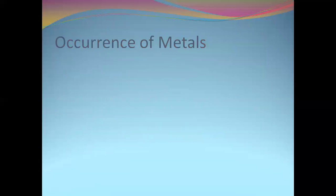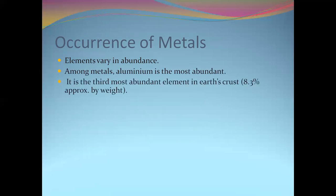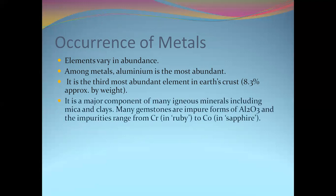Then we can go for occurrence of metals. The elements which are in abundance, that means availability is different. Among metals, aluminum is the most abundant. It is the third most abundant element in the earth's crust. It's a major component of many igneous minerals including mica and clays. Many gemstones are impure forms of aluminum and the impurity ranges from chromium to cobalt.